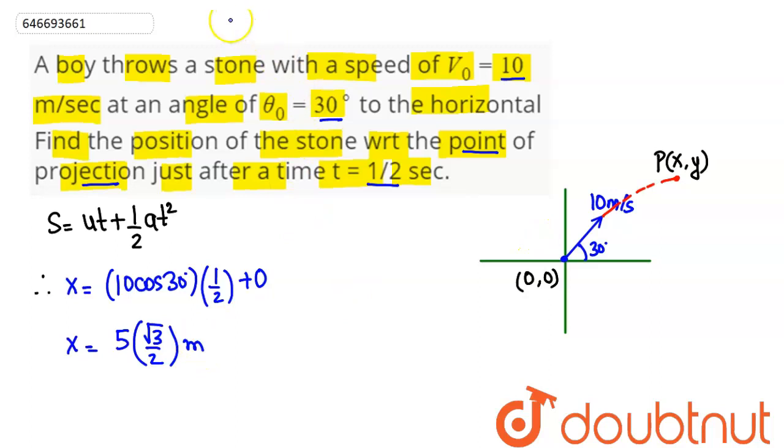Similarly calculating the y component, displacement along y direction is plus y. Initial velocity along the y direction is 10 sin of 30 degrees. Time is 1 upon 2, plus half acceleration is minus 10 as gravity, and time is 1 upon 2 whole squared.